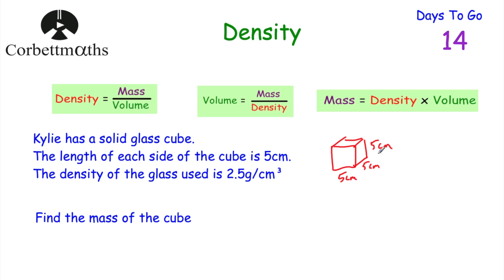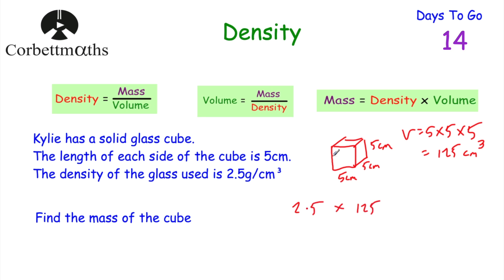To find the mass, I first need to find the volume of the cube. Volume equals length times width times height, so 5 times 5 times 5 equals 125 centimetres cubed. Now, the density is 2.5 grams per centimetre cubed, meaning every centimetre cubed has a mass of 2.5 grams. Mass equals density multiplied by volume: 2.5 multiplied by 125 equals 312.5 grams. So the mass of the cube is 312.5 grams.